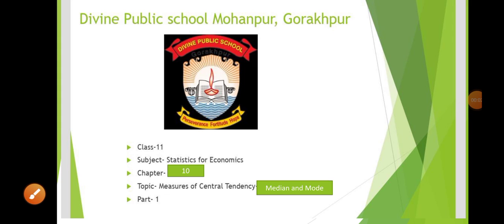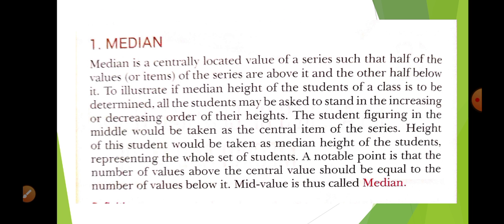Hello, class 11th students. Today I am going to start a new chapter — that is Chapter 10. The topic is Measures of Central Tendency: Median and Mode. From your book, Statistics for Economics, this is Part 1. In this chapter, we are going to study about partition values, positional averages, median, partition value, and mode. In this video, we are going to discuss about the median.